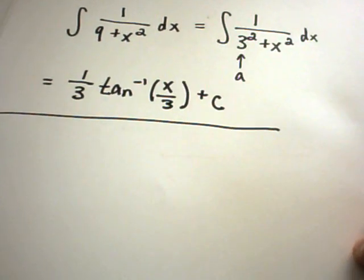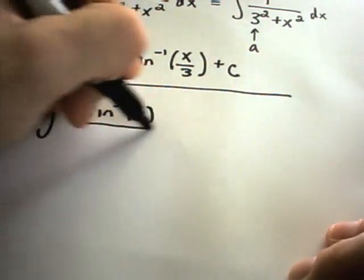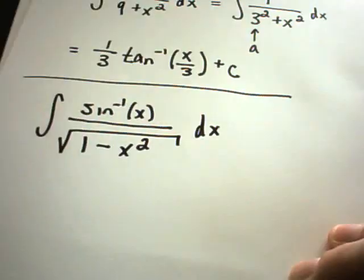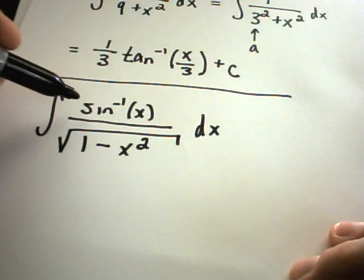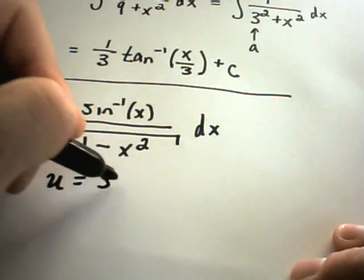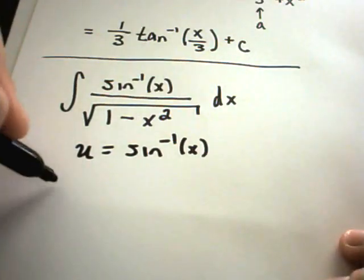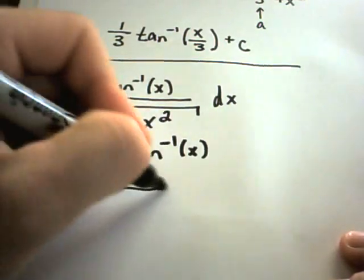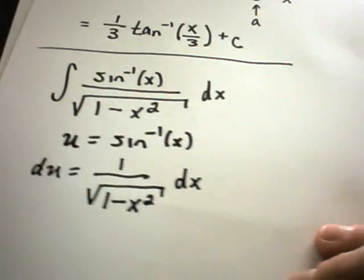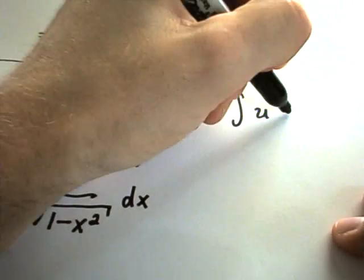Let's look at another. Suppose here we had to integrate arc sine of x over the square root of 1 minus x squared dx. Well recall the derivative of arc sine is 1 over the square root of 1 minus x squared. So here we could simply do a u substitution. Letting u equal arc sine of x. Du again is going to be the stuff we need in the denominator, 1 over the square root of 1 minus x squared dx. So we can actually rewrite this entire integral as simply the integral of u du.